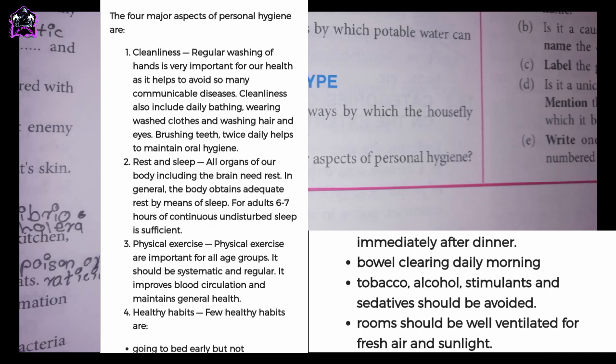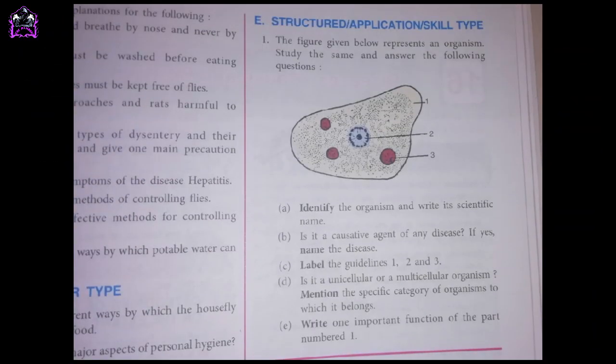Premises should be well ventilated for fresh air and sunlight. Question A, structured application skill types. First one: the figure given below represents an organism. Study the same and answer the following questions. A. Identify the organism and write its scientific name. B. Is it a causative agent of any disease? If yes, name the disease. C. Label the guidelines 1, 2 and 3. D. Is it a unicellular or multicellular organism? Mention the specific category of organisms to which it belongs.